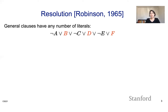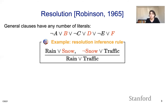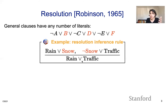The idea of resolution is I don't want to limit myself to specific types of clauses. I can talk about general clauses, which are disjunctions of positive or negative literals. The idea of resolution is: if you have a bunch of clauses, you have an inference rule that cancels out your positive and negative literals. For example: if it is raining or snowing, and if it is not snowing or there is traffic, one can infer that it is raining or there is traffic.